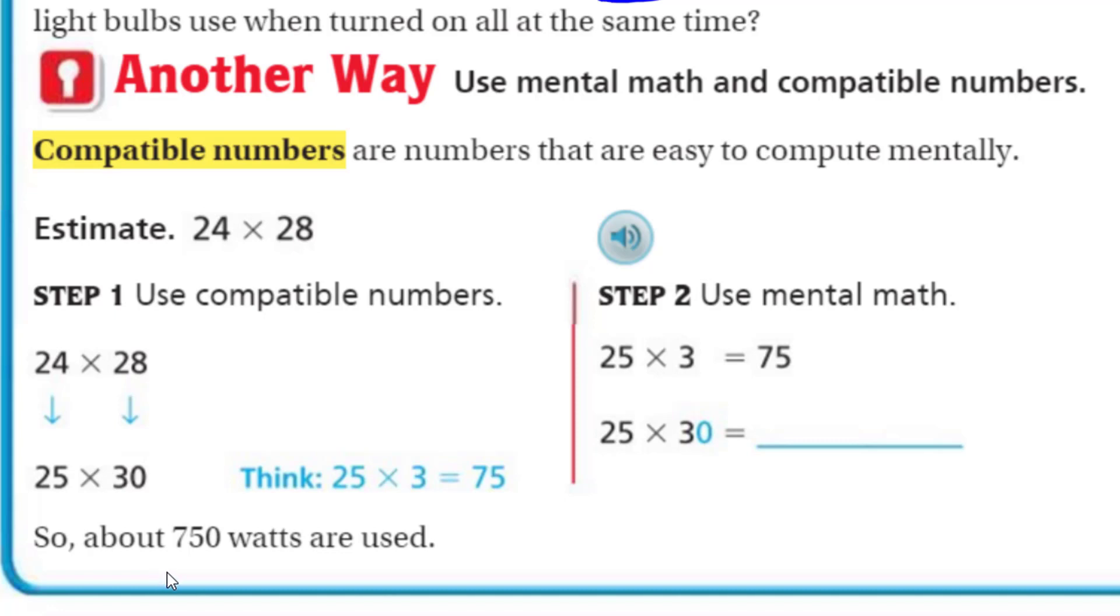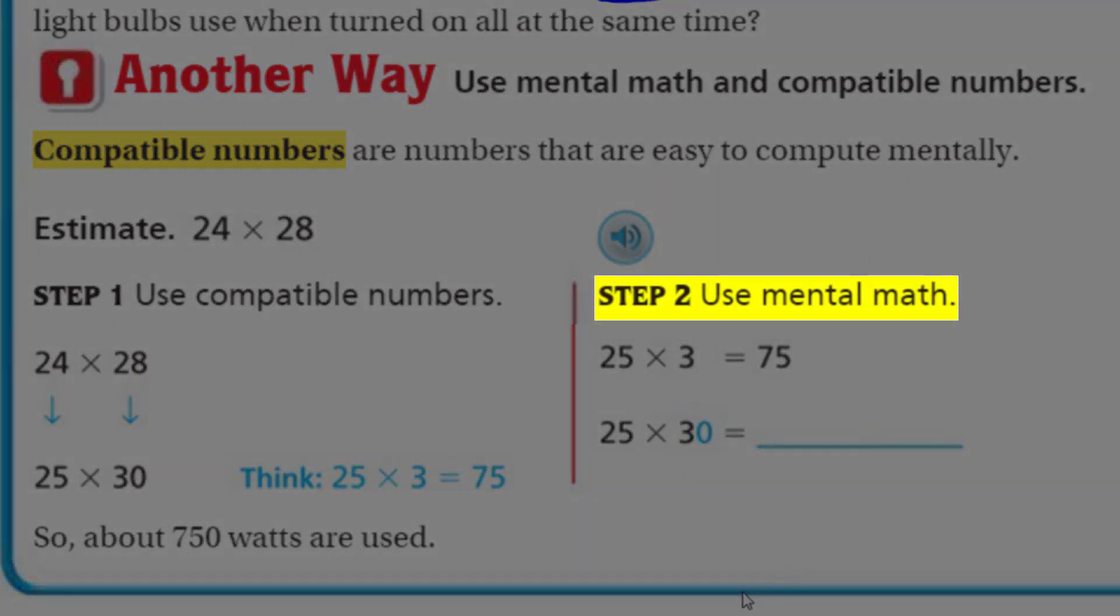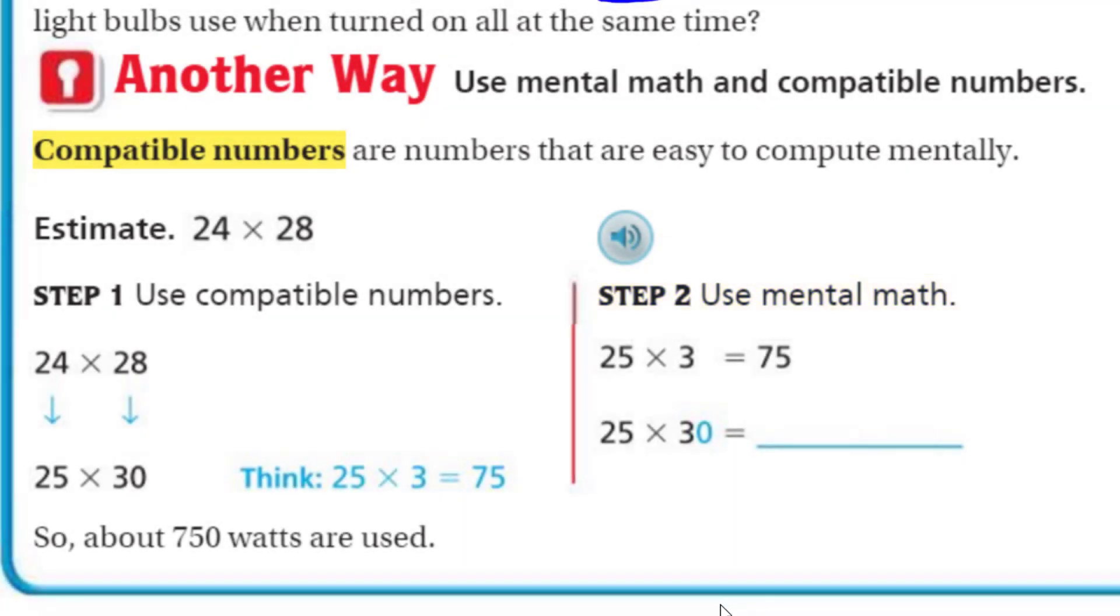Now, step one. Use compatible numbers. So we're going to estimate those two numbers. A compatible number for 24 would be 25. And then a compatible number for 28 is 30. It says, think 25 times 3 equals 75. So, now I understand why 25 is a compatible number. Because, 25 times 3, it's like a quarter. It's very easy to compute mentally. Now that we know that 25 times 3 is equal to 75. Well, 25 times 30, which is what our problem states now, it's just simply 750.